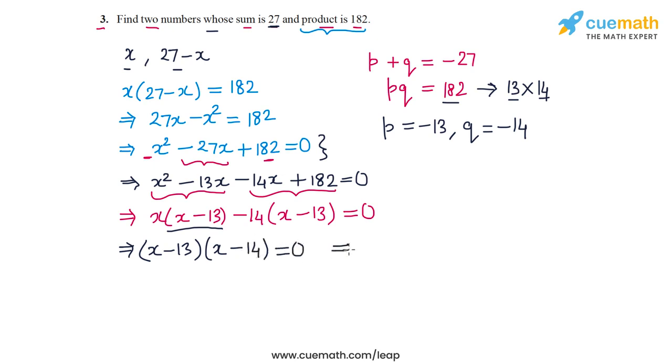And now we can see that the two roots of this equation are x equal to 13 and x equal to 14. So if x is equal to 13, then the first number is 13, and the second number is 27 minus 13, which is 14.